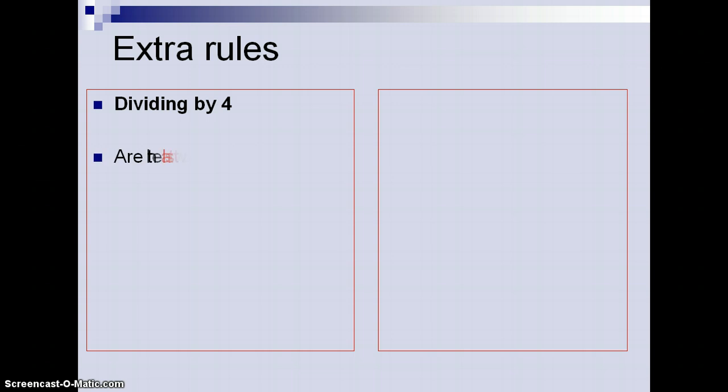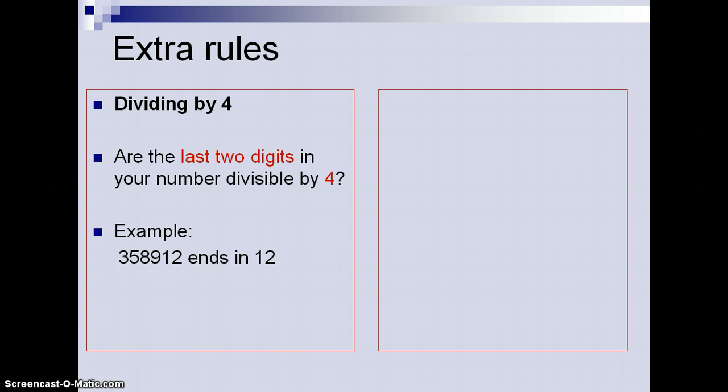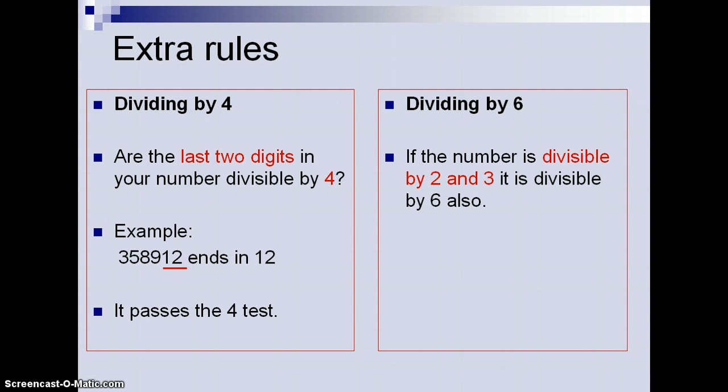Now let's explore some rules for dividing by 4. For 4, you would look at the last two digits and see if that number is divisible by 4. Here's a large number that ends in 12. It passes the test.